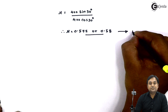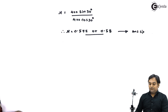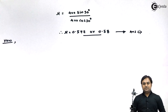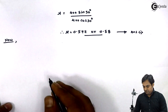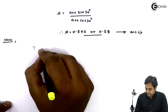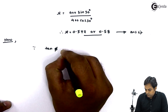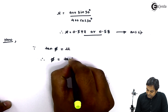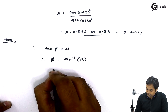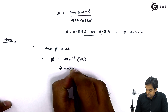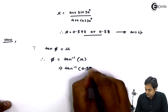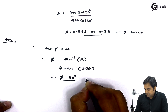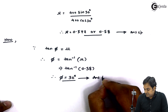The second part is the angle of friction. Since tan phi equals mu, therefore phi equals tan inverse of mu equals tan inverse of 0.58. So phi comes out to be 30 degrees. That is the second answer.